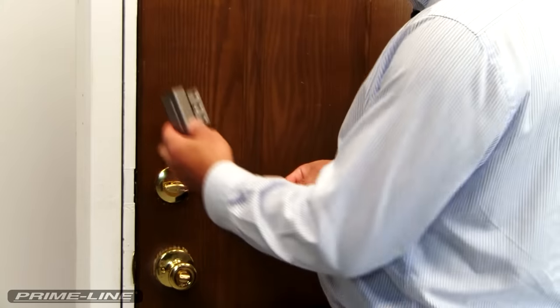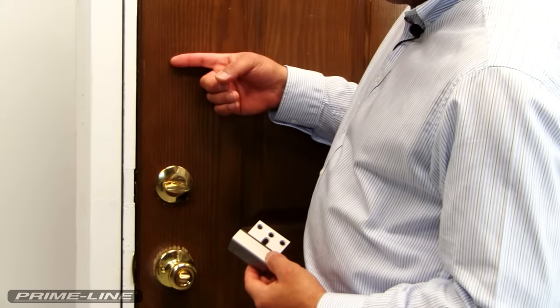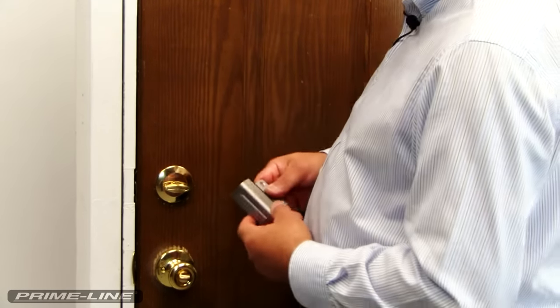Your first step will be to determine where the lock will be installed. Ideally, you'll want to mount this a minimum of 6 inches above the existing doorknob or deadbolt hardware.